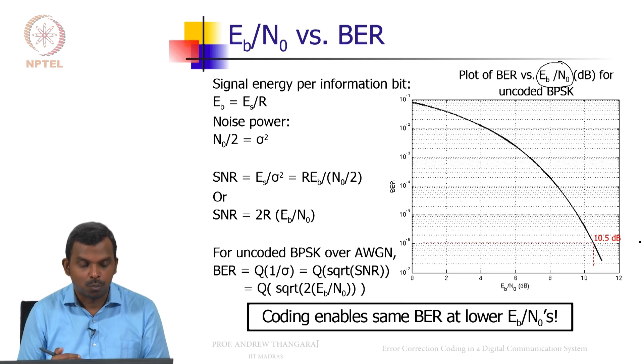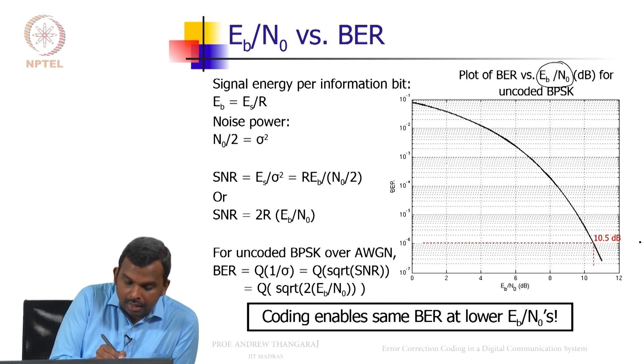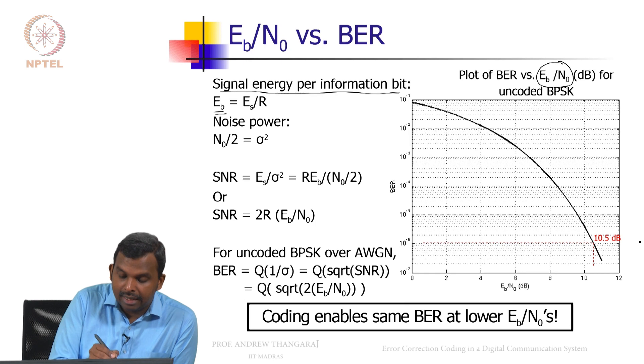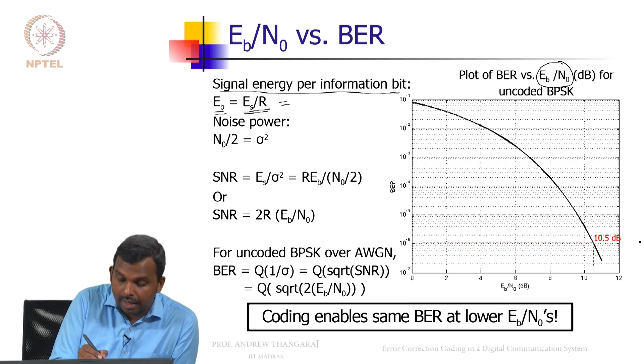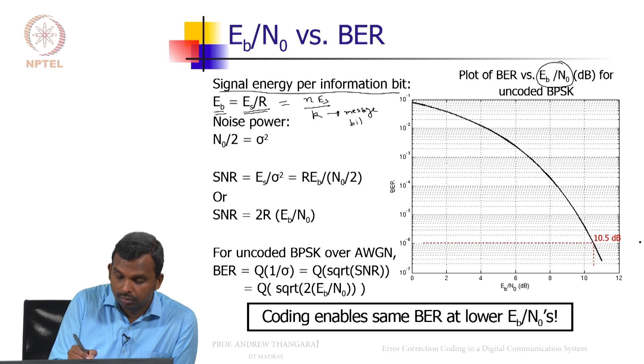So signal Eb is the signal energy per information bit and it is defined as Es divided by R. How does that come? This is N times Es divided by k. So k information bits, k message bits gets converted into N information bits, N code word bits.